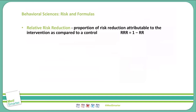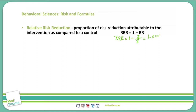Here's an example of relative risk reduction. If 2% of the patients who receive flu shots develop the flu, while 8% of unvaccinated patients develop the flu, to calculate our relative risk reduction we do 1 minus our relative risk of 2% divided by 8%. Calculating that out, we get 1 minus 0.25, which equals 0.75. So our relative risk reduction in this case is 0.75.